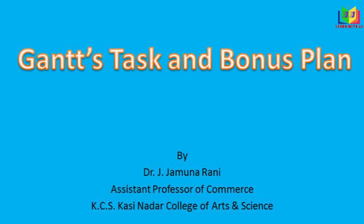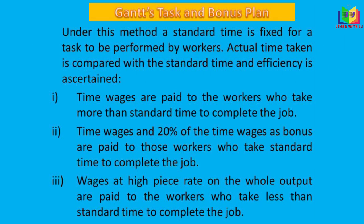In this video we'll see Gantt's Task and Bonus Plan. Under this method, the standard time is fixed for doing the task. The performance is evaluated by comparing the actual time and the standard time. The efficiency is assessed based on this comparison. If the efficiency is less than 100%, that is the actual time is more than the standard time, it is treated as less than 100% efficiency.